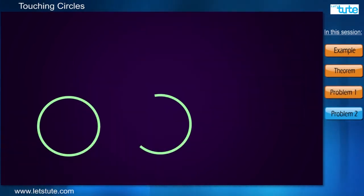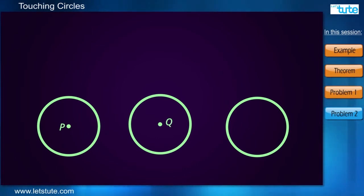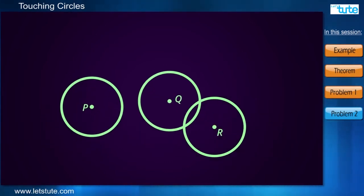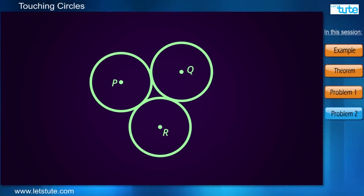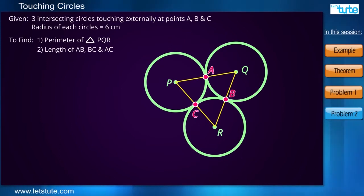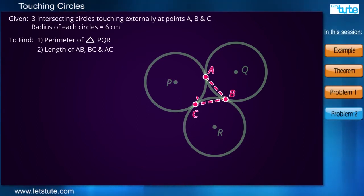Three congruent circles with center P, Q and R with radius 6 cm touch each other externally at points A, B and C. Now using their centers, a triangle was made. Now in here, we have to find the perimeter of the triangle and the length of AB, BC and AC.